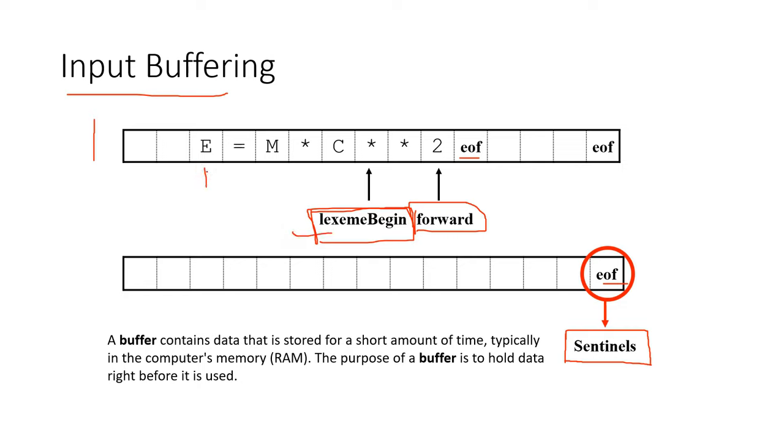First, the lexeme begin pointer points to the first element and the forward pointer also points to the same element at the beginning. We get to know that E is the first character. Now it isn't mandatory that each identifier, operator, or keyword needs to be single digits - it can have multiple digits, so it would be like ELSE if required.